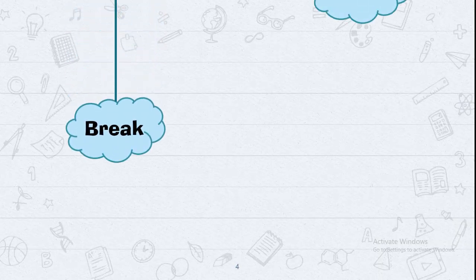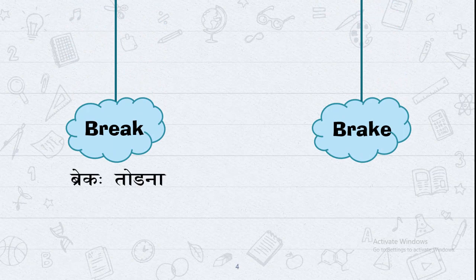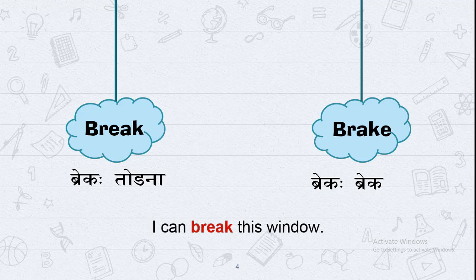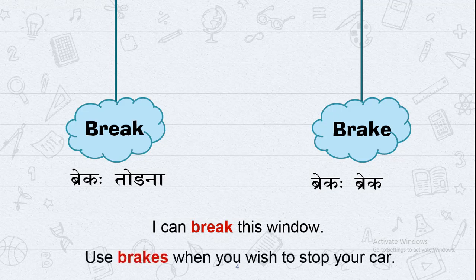The third pair is Break and Brake. Break — todna — means to break something; it is a verb. While the second, Brake, is a noun — the brake we apply to reduce speed in a car, bike, or cycle. Example: 'I can break this window' — mein is window ko tod sakta hoon. While: 'Use brakes when you wish to stop your car' — gaadi ne rokwa maade brake no upyog karo.